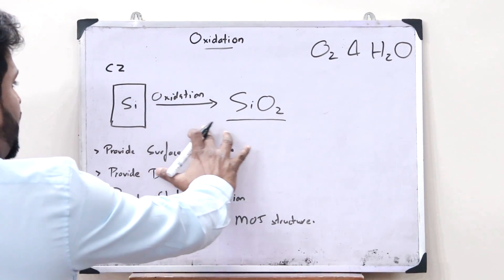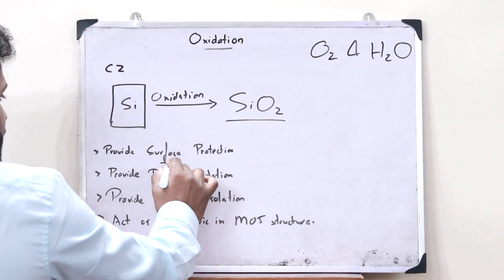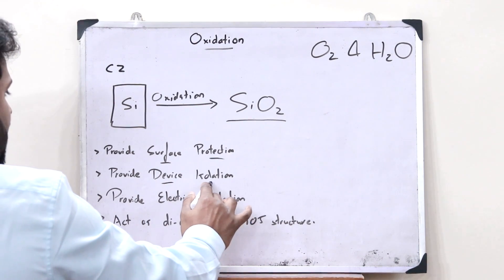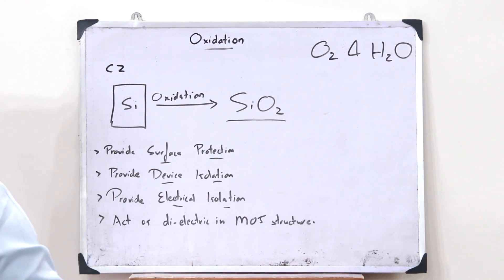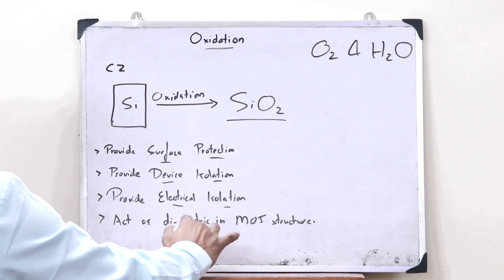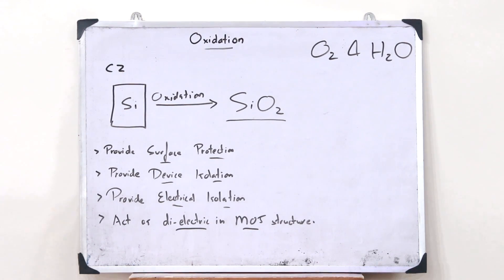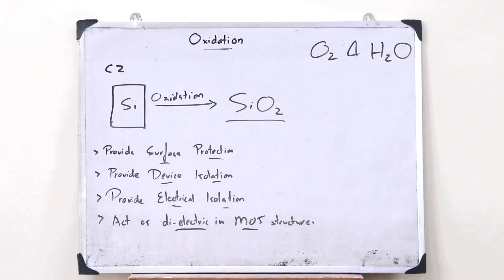Upon converting this silicon wafer into SiO2 or silicon dioxide, we can provide surface protection. We can also provide device isolation, such as electrical isolation. And also, it acts as a dielectric in MOS structures. These are the uses of oxidation in VLSI.